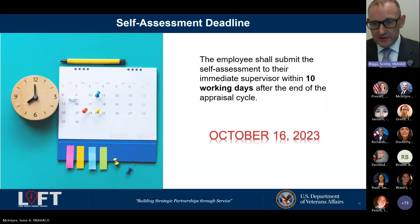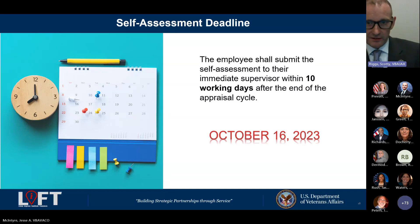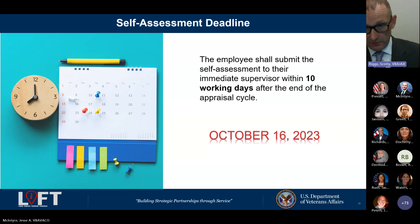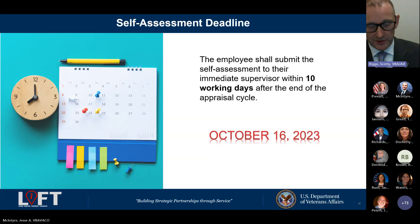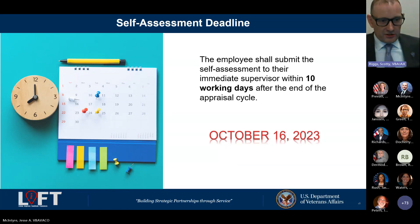There is a deadline for the self-assessment. It must be communicated within 10 working days after the end of the cycle. Since our OPM-approved system ends September 30th, that equates to October 16th. Your supervisor needs to receive your self-assessment so they can meet their deadline to issue your final rating. They won't issue the final rating before that 10-day window because they must give you the opportunity to submit. Just something to keep in mind regarding the time frame.